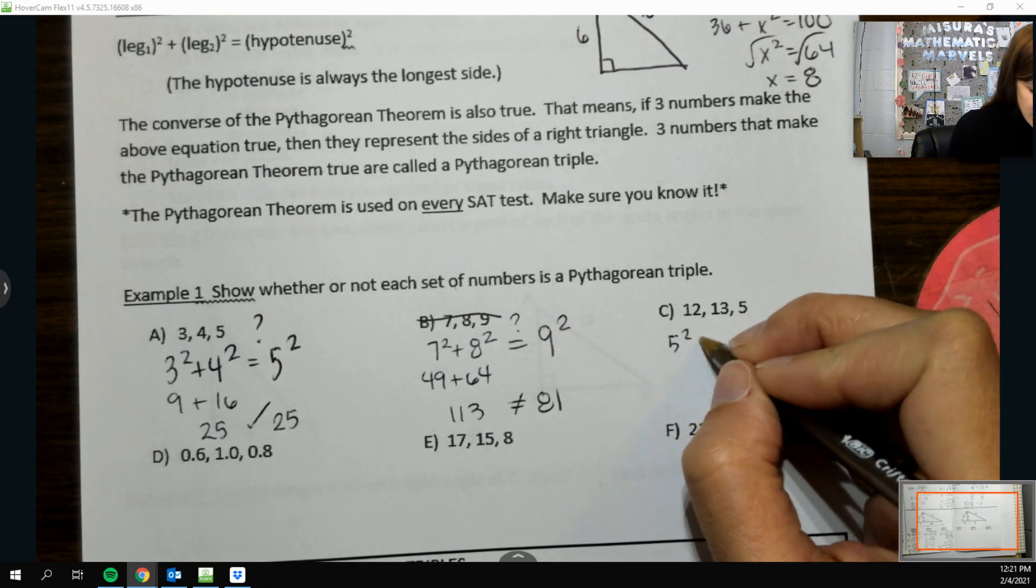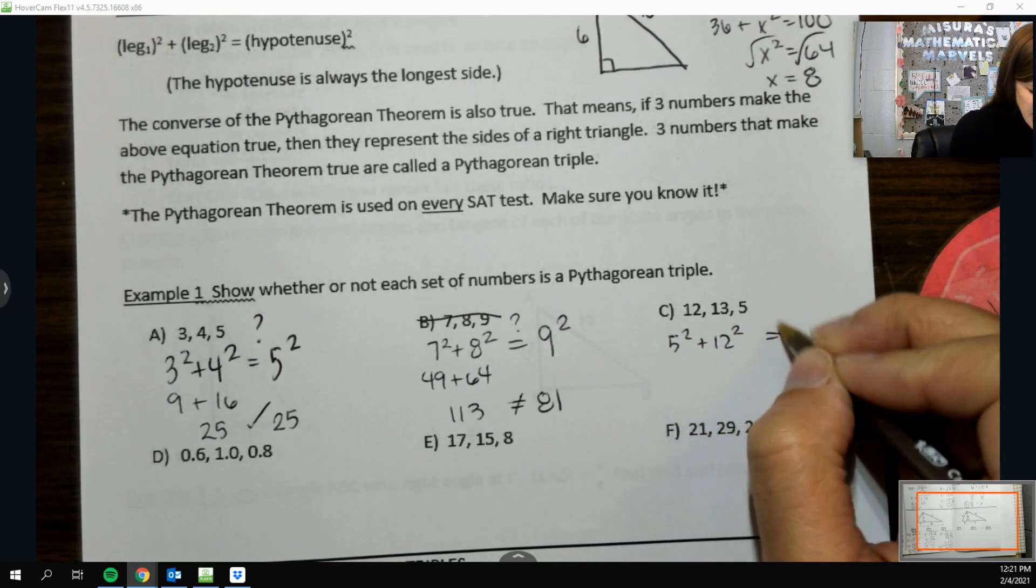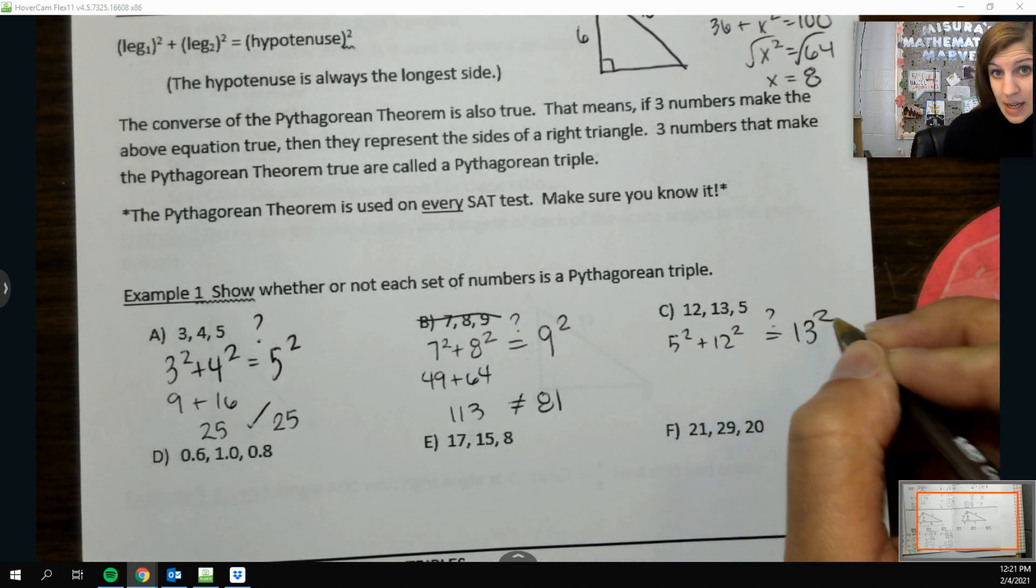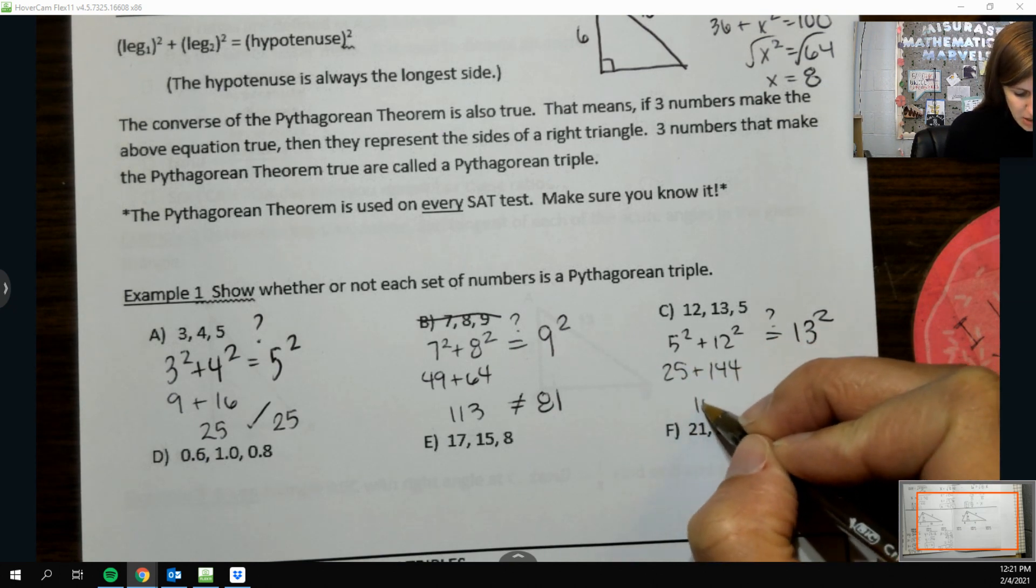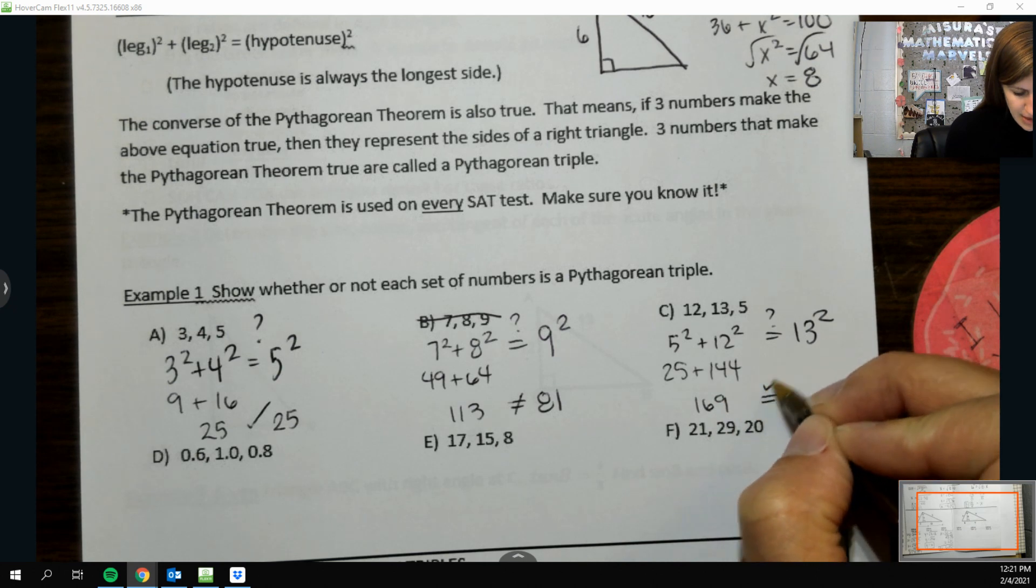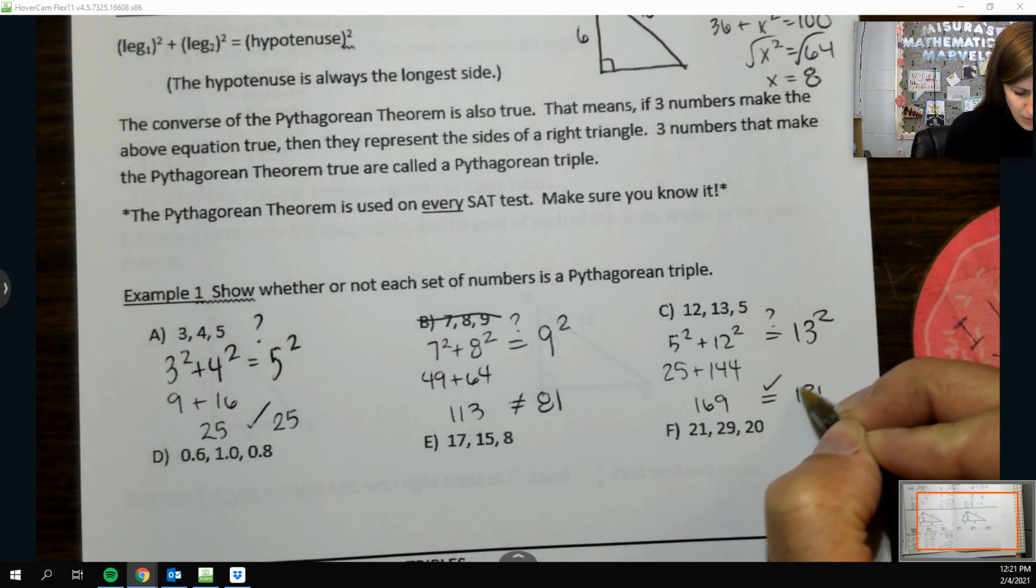5 squared, 12 squared. Is that 13 squared? I don't know. We're about to find out. So 25 plus 144 is 169. And that is also 13 squared. So 169.